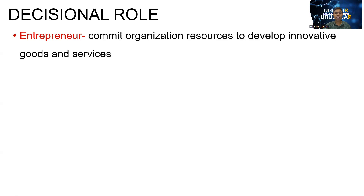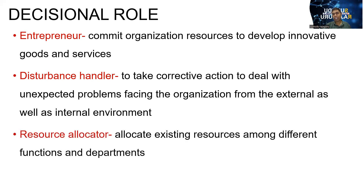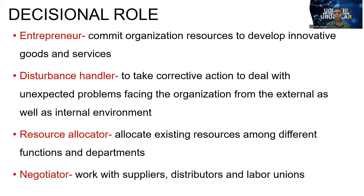Then the decisional role. When we talk about the decisional role, sometimes the manager has to take entrepreneurial decisions — committing organizational resources to develop innovative goods and services. Then disturbance handler role: to take corrective actions to deal with unexpected problems facing the organization from external as well as internal sources. Then resource allocator role: allocating existing resources among different functions and departments. The last one is negotiate — working with suppliers, distributors, buyers, labor unions, and other parties. That is also categorized under the decisional role.